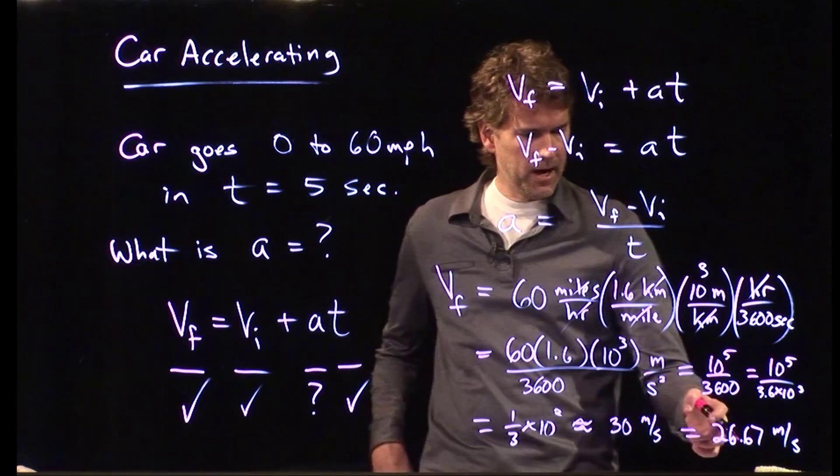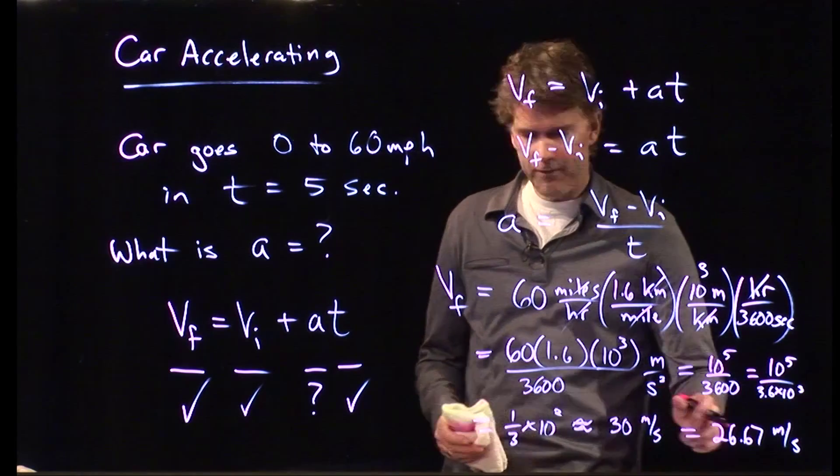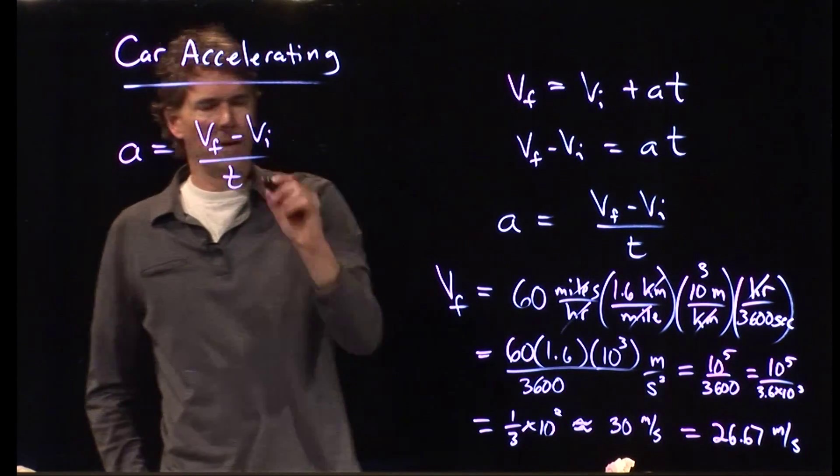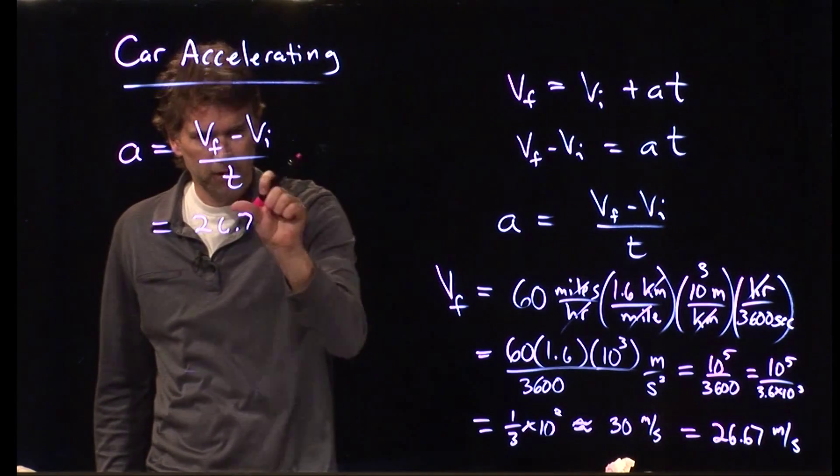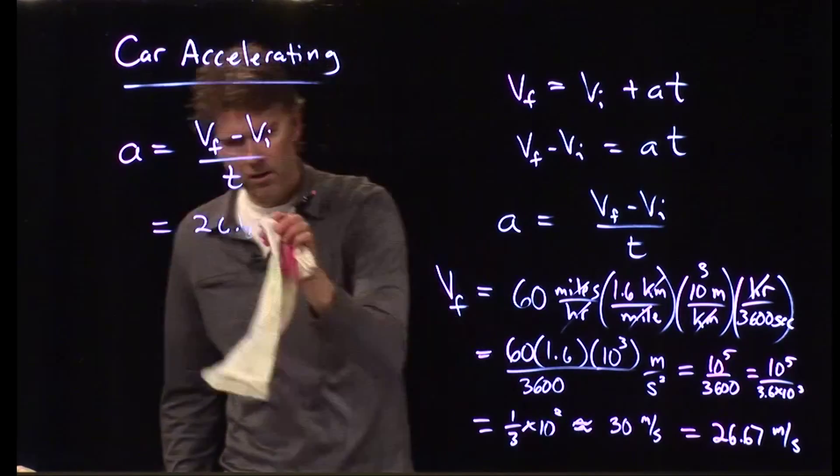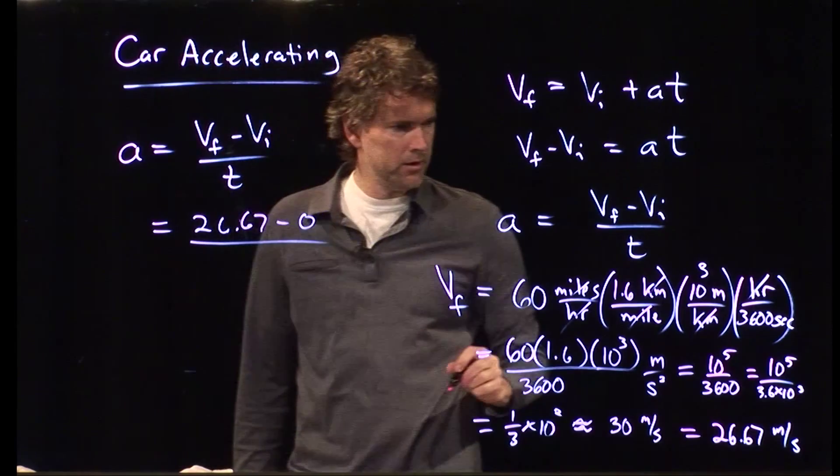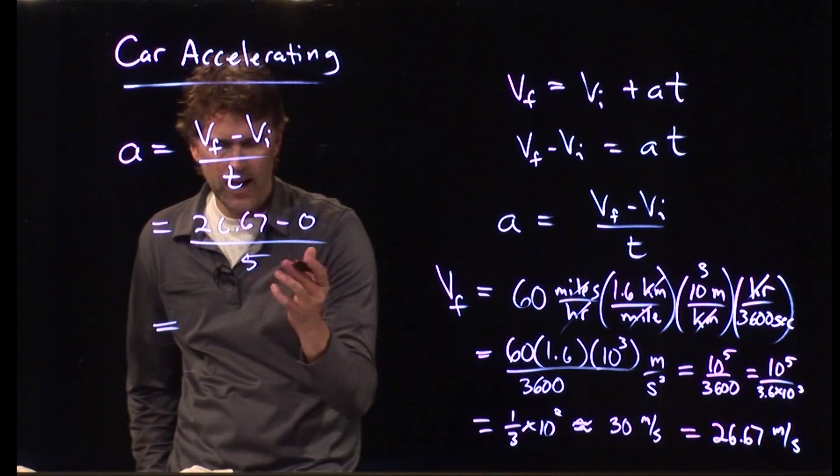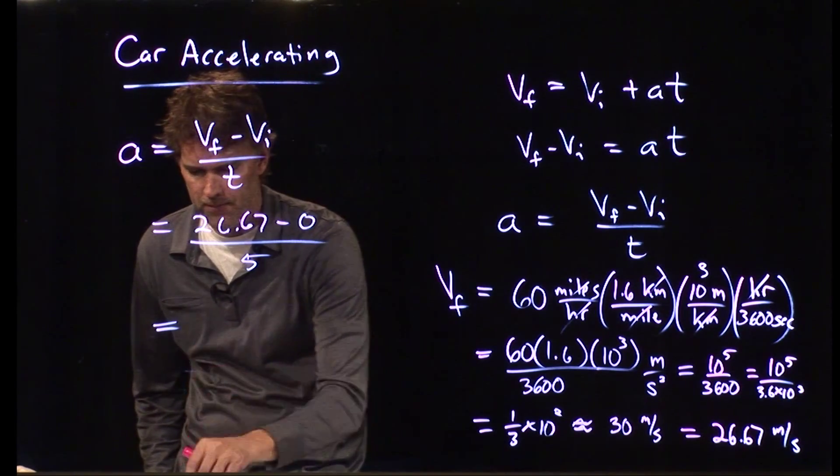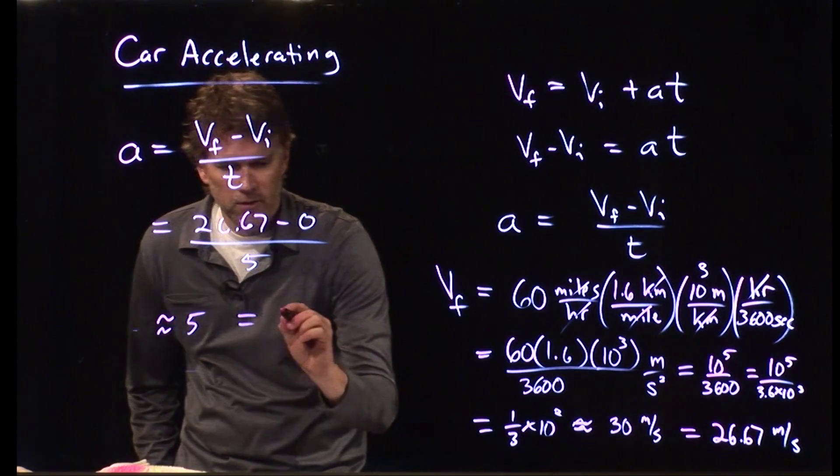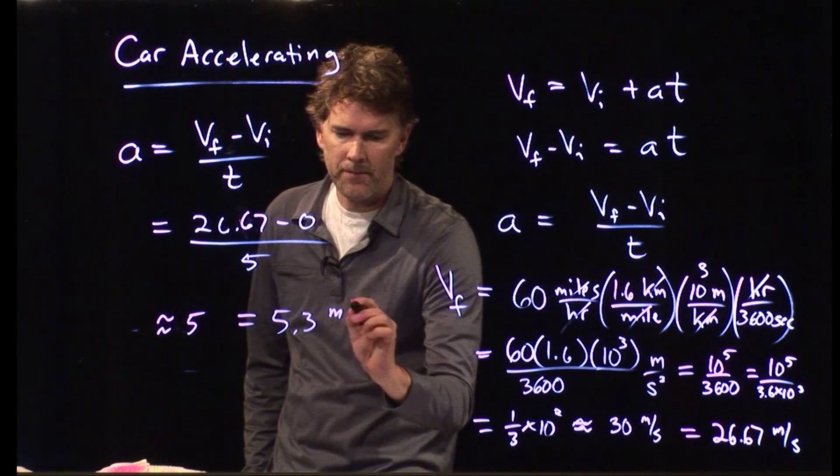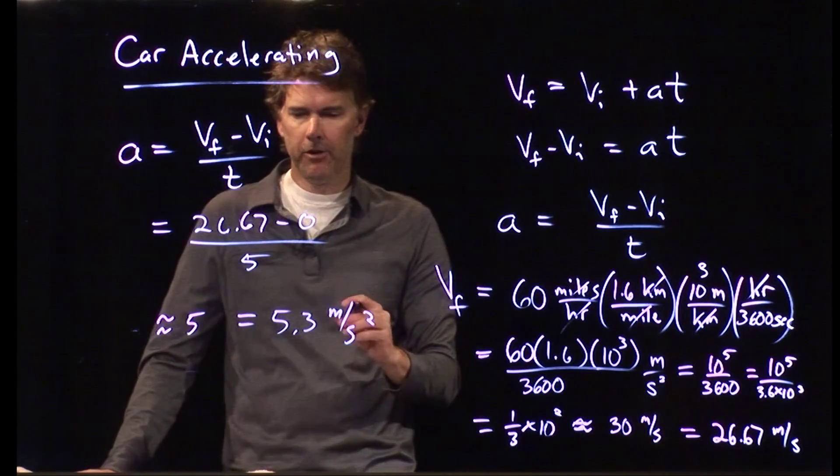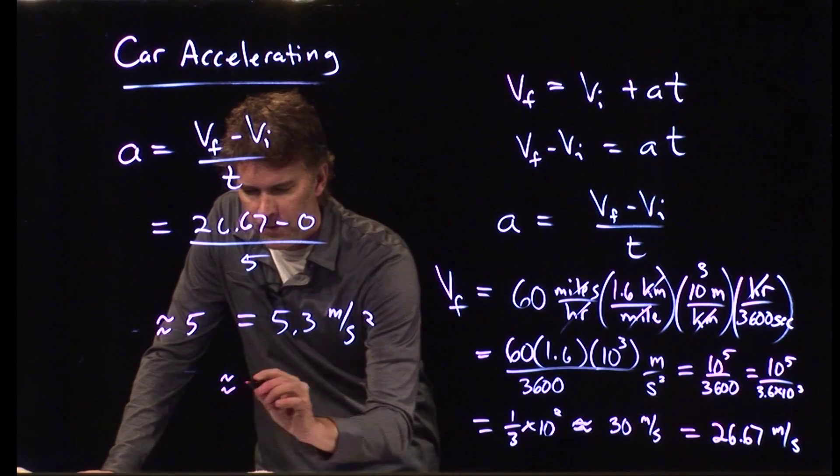So we approximated that as 30 meters per second. The exact answer was 26.67 meters per second, which sounds right because we're getting 60 miles per hour and we said it's roughly a factor of two. Okay, so VF is that. Let's plug it into our equation and see what we get for A. We said A was VF minus VI divided by T, and we have 26.67 minus 0 divided by T, which we said was 5 seconds. So what is that? 26.67 over 5 is approximately 5. If you run it in your calculator, what do you get for the actual answer? 5.3. 5.3 meters per second squared.